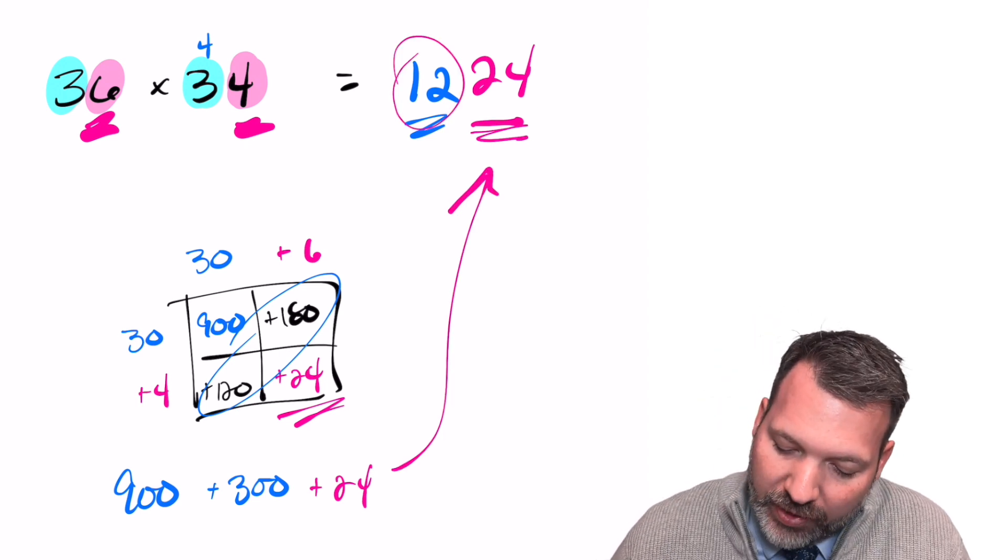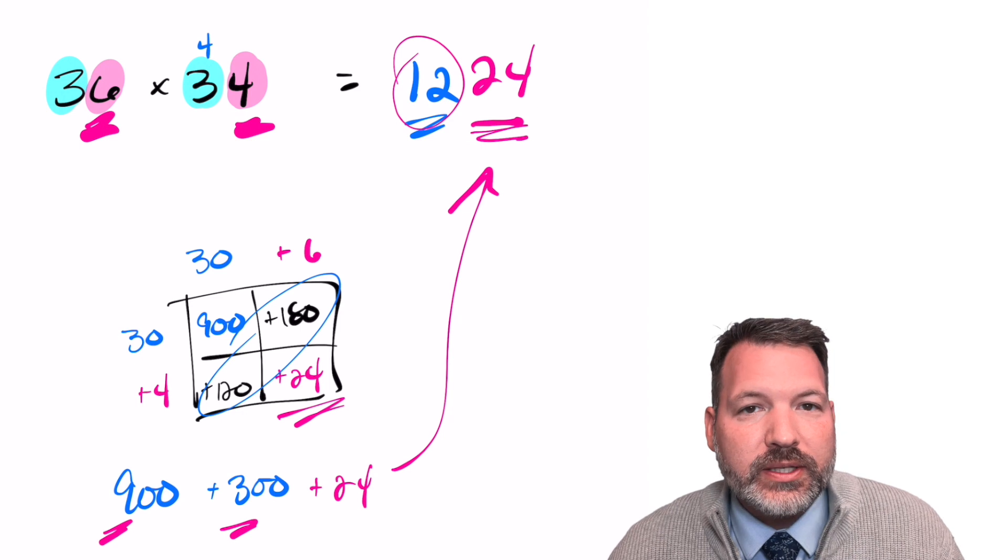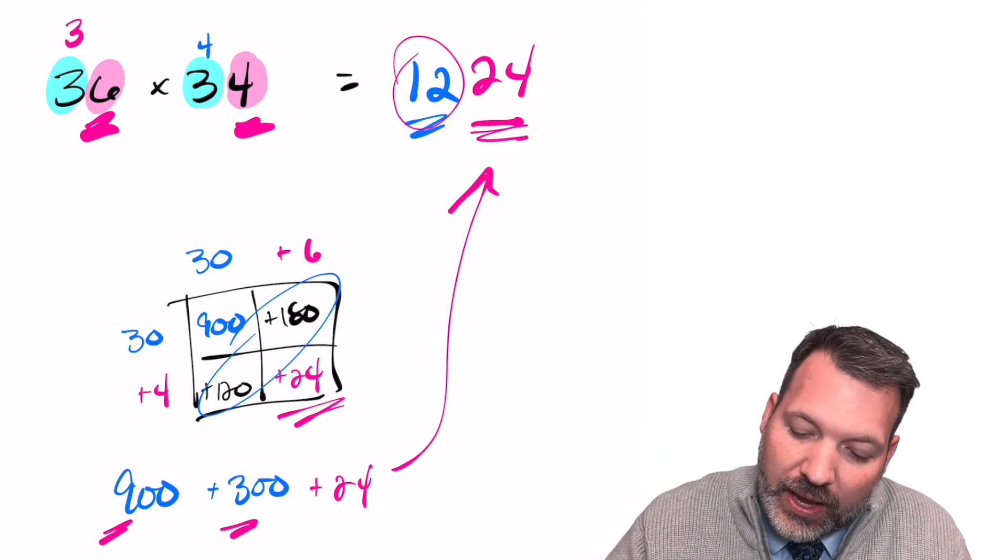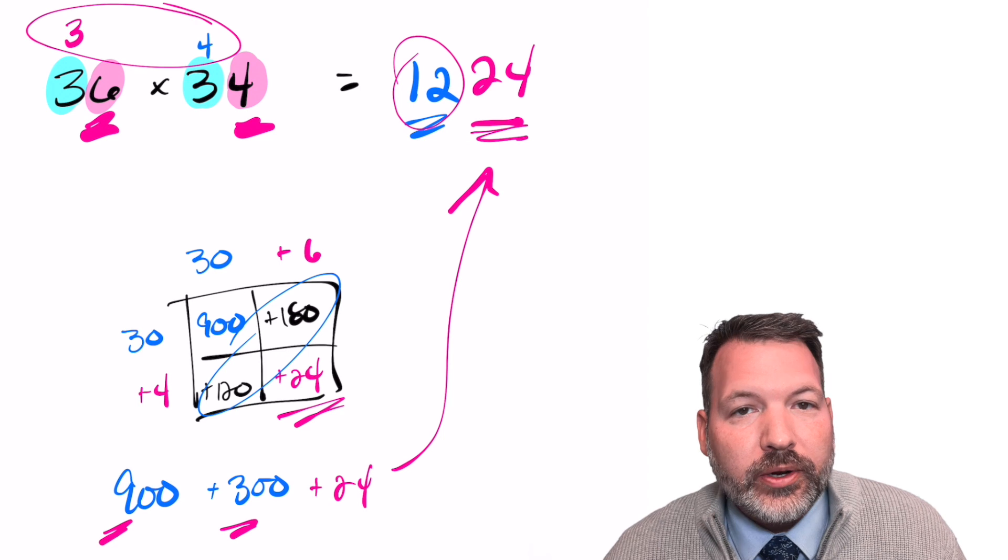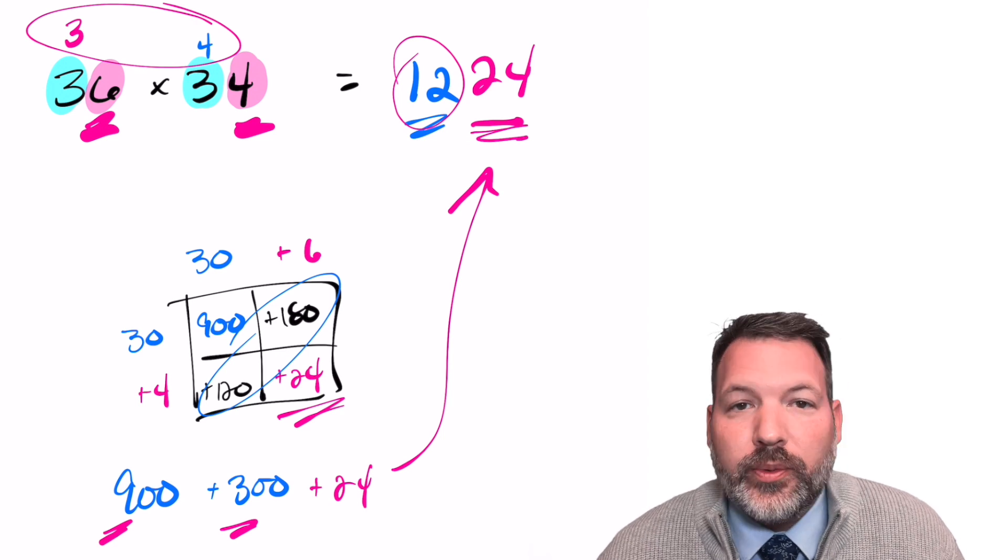Not only that, but the 12 that we can see coming now from a nine plus a three happens to be the same thing as the three times four that we talked about earlier from the tens digit when we were performing our trick.